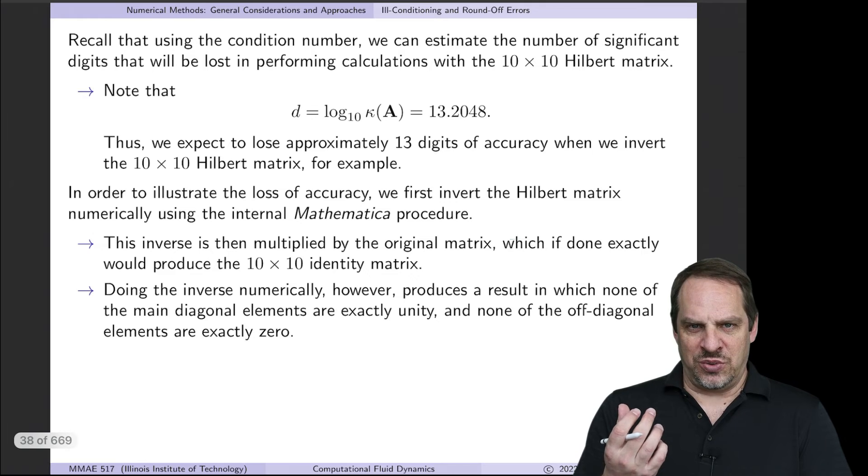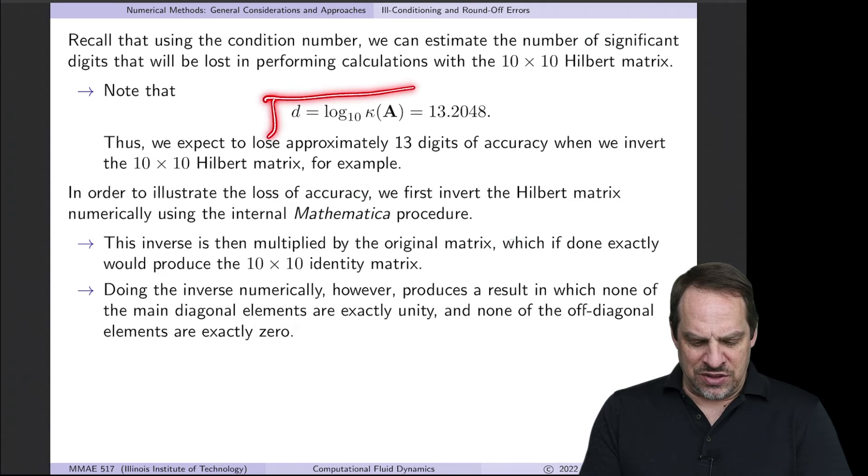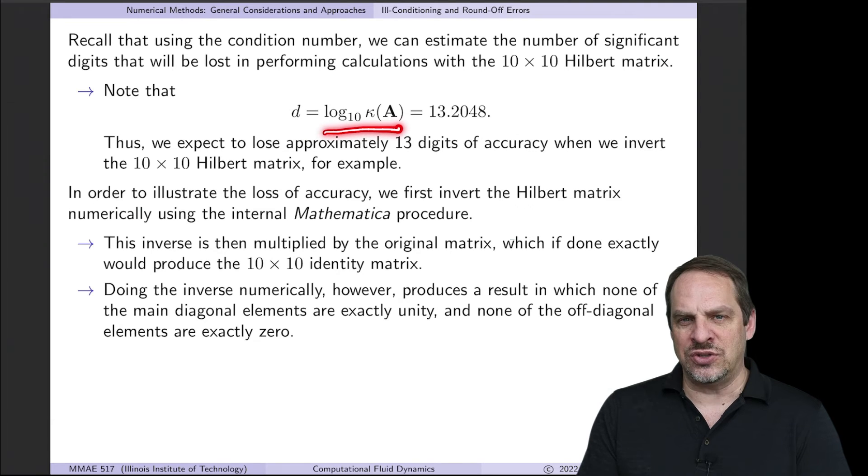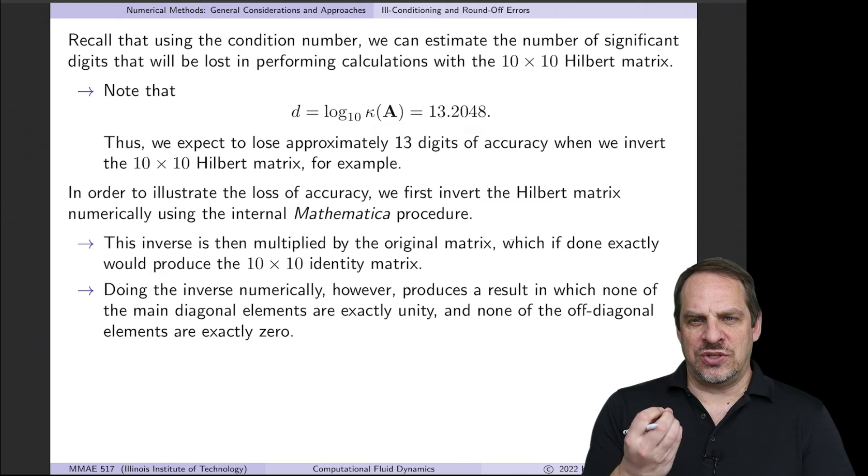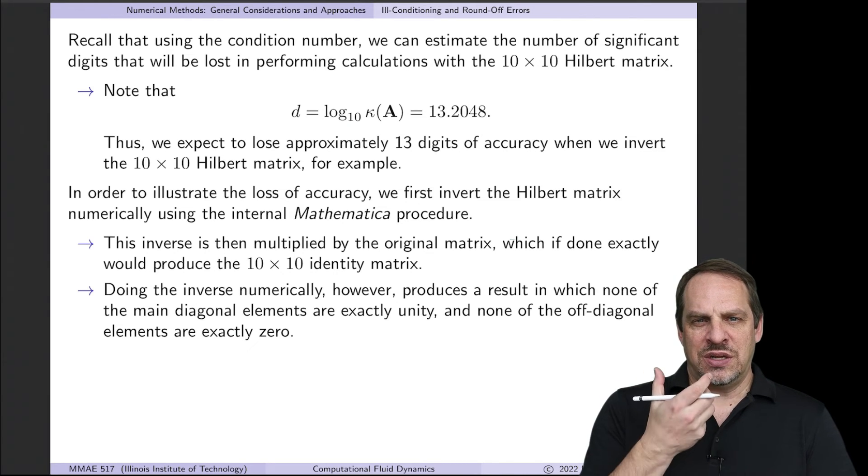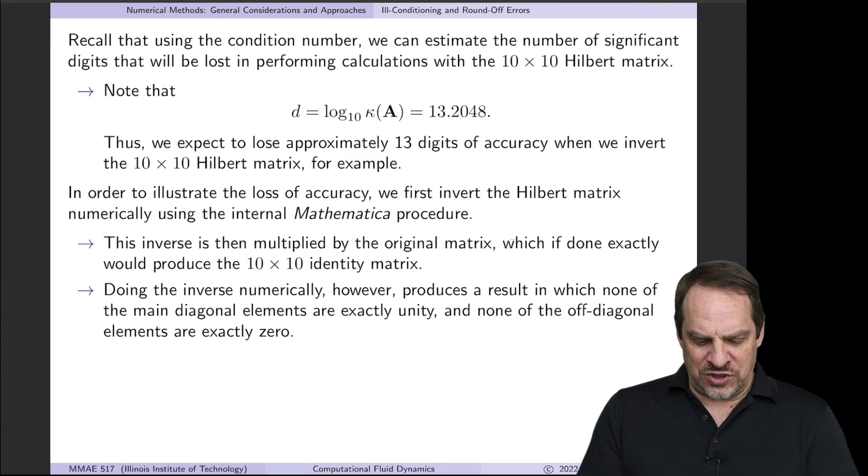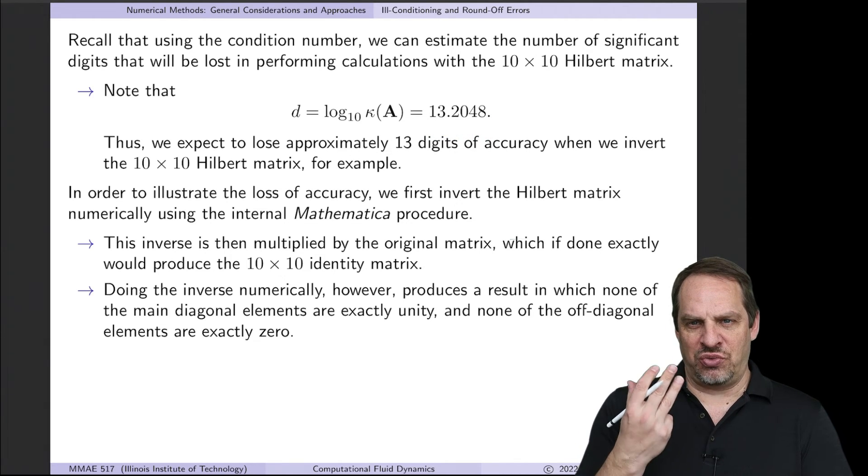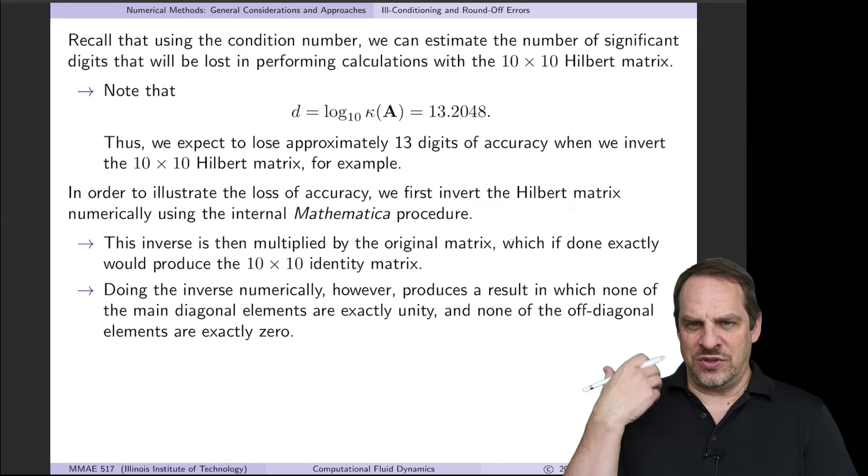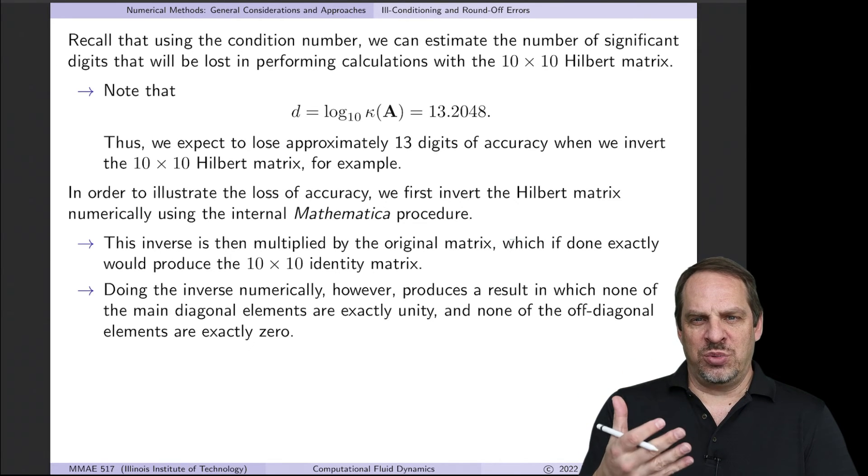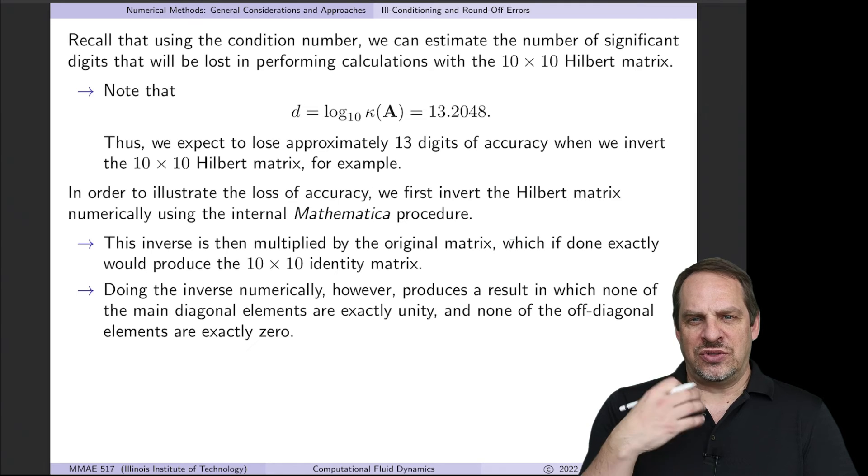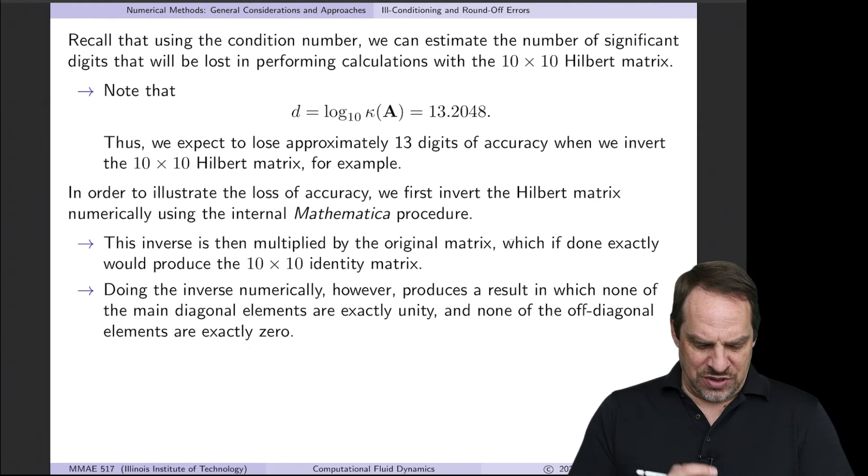So first of all, let's use that condition number that we just obtained to estimate the number of digits of accuracy that we expect to lose. Remember, if you take the log base 10 of the condition number, you get an estimate for the number of digits that you expect to lose. We start with 16 in double precision. We expect to lose about 13 of those 16 digits, so that only leaves 3 left. So when I, for example, which is what we'll do here, take the inverse of the Hilbert matrix, I expect the answer that I get to only be accurate to about 3 significant figures.